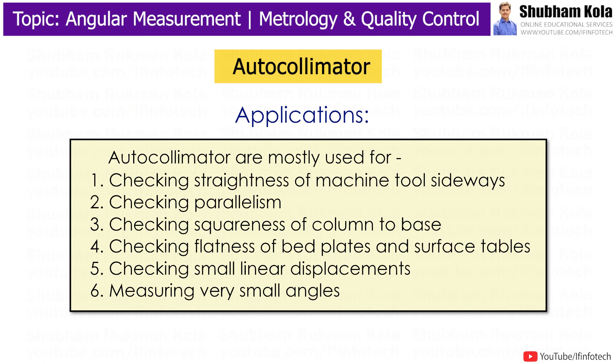Attocholimeters are mostly used for checking the straightness of machine tool slideways, checking parallelism, checking squareness of column to base, checking flatness of blade plates and surface tables, checking small linear displacement, and measuring very small angles.